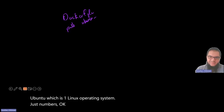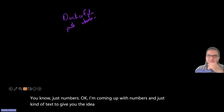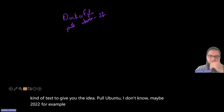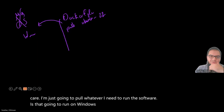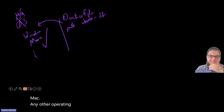I'm just coming up with numbers to give you the idea. Pull Ubuntu, maybe version 22 — which means I don't care what my operating system is. I'm just going to pull whatever I need to run the software. Is that going to run on Windows? Mac? Any other operating system? Yes — that is the container. That's the beauty of containers.